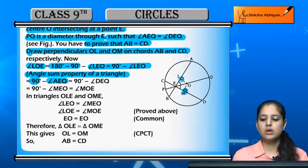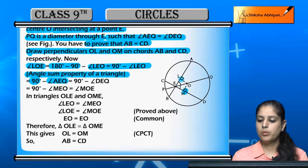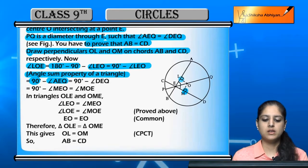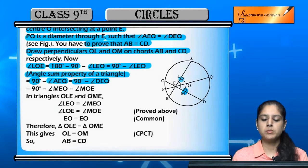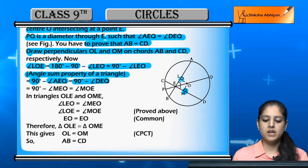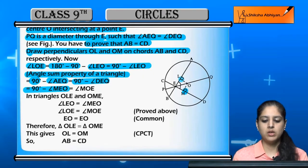Since angle AEQ equals angle DEQ (given), we can substitute to get angle LOE equal to angle MOE. This gives us 90 minus angle AEO equals 90 minus angle MEO, confirming the angles are equal.